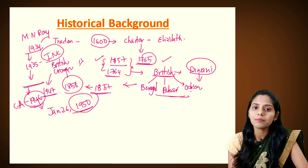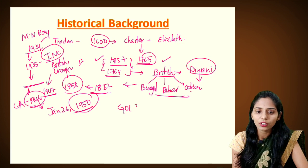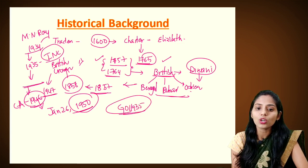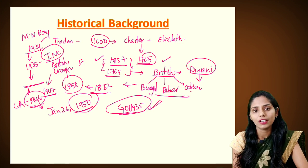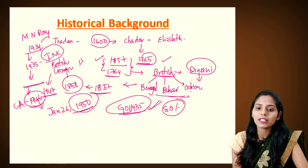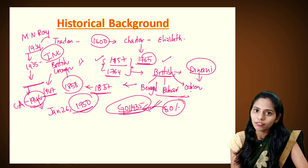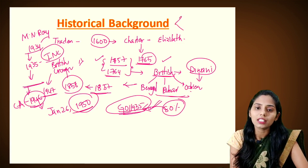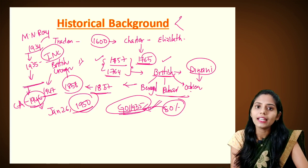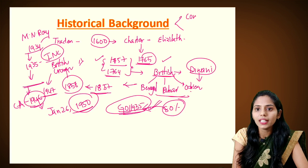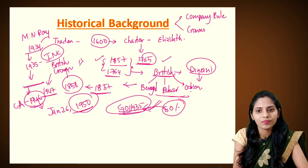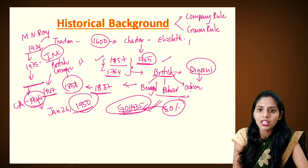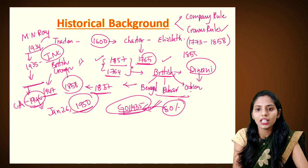Our Constitution draws heavily from the British rule's legal framework. The Government of India Act of 1935 is the most significant source — about 80% of our Constitution is derived from this act. Looking at the legal framework of the historical background, the British government came up with laws mainly under two types: the first is company rule, and the second is Crown rule.